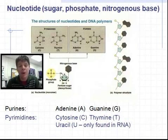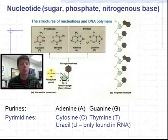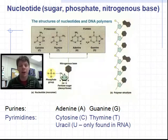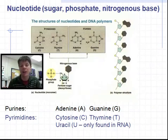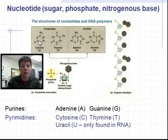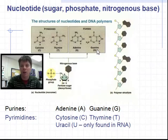On this slide, we're reviewing the basic structure of DNA. DNA is a polymer and the monomers that make up DNA are called nucleotides. Nucleotides contain three parts: a sugar — in DNA that's deoxyribose — a phosphate group, and a nitrogenous base. The nitrogenous bases shown here are cytosine and thymine, which are pyrimidines. The purines include adenine and guanine.